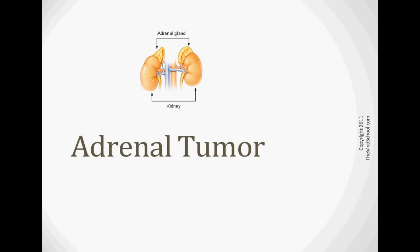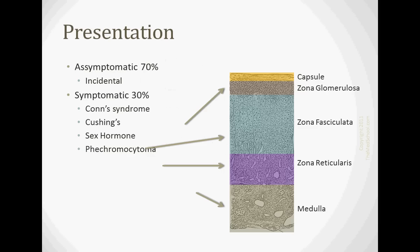Let's talk about the adrenal tumor. Most of the time, these adrenal tumors are going to present as incidentalomas or tumors that are asymptomatic and they show up on some other type of imaging for another problem. The symptomatic ones are about 30% of them and they represent symptoms according to the layer that they originate in.